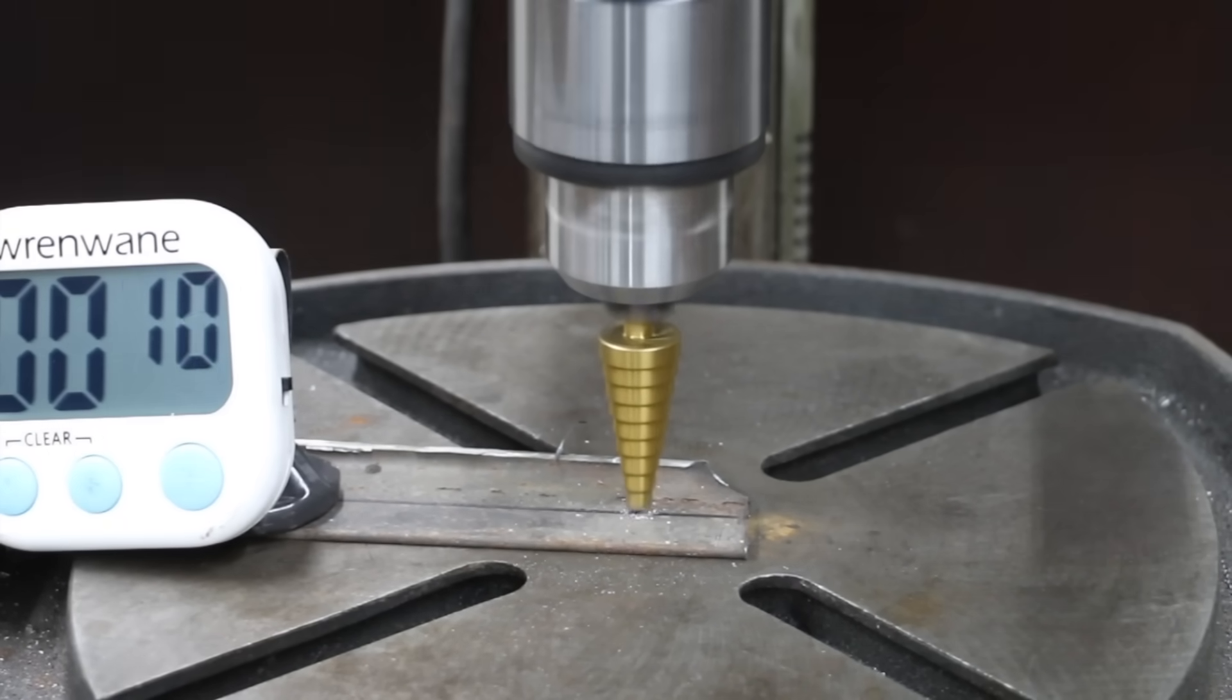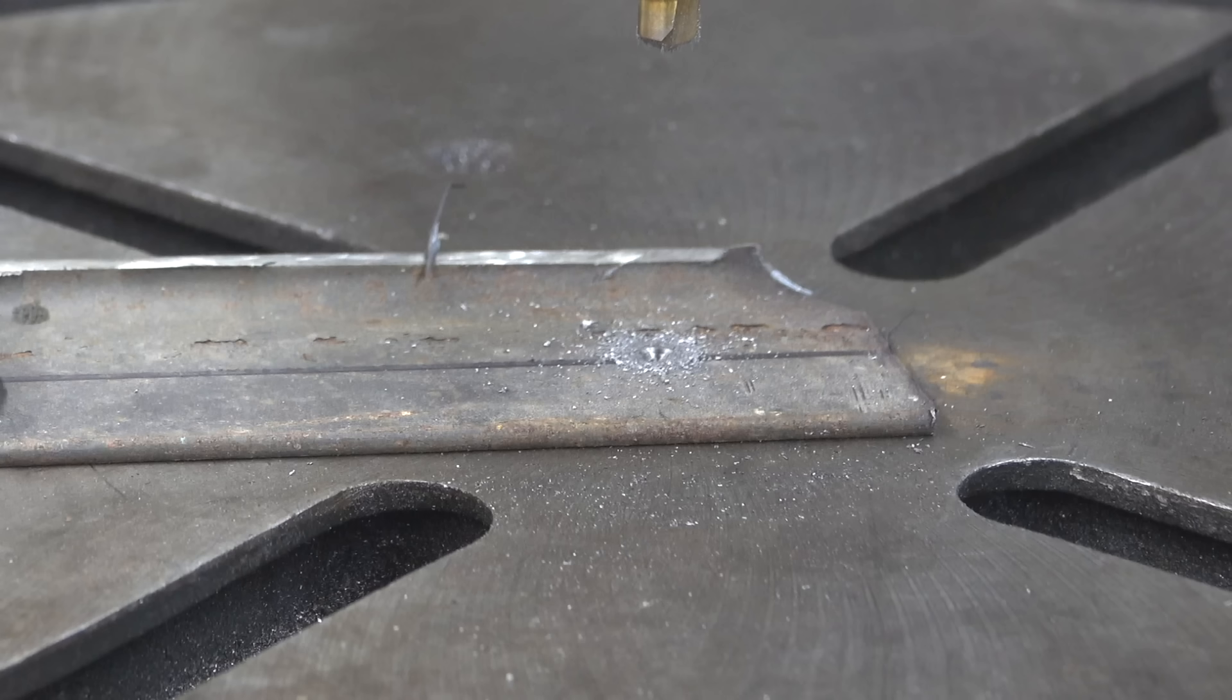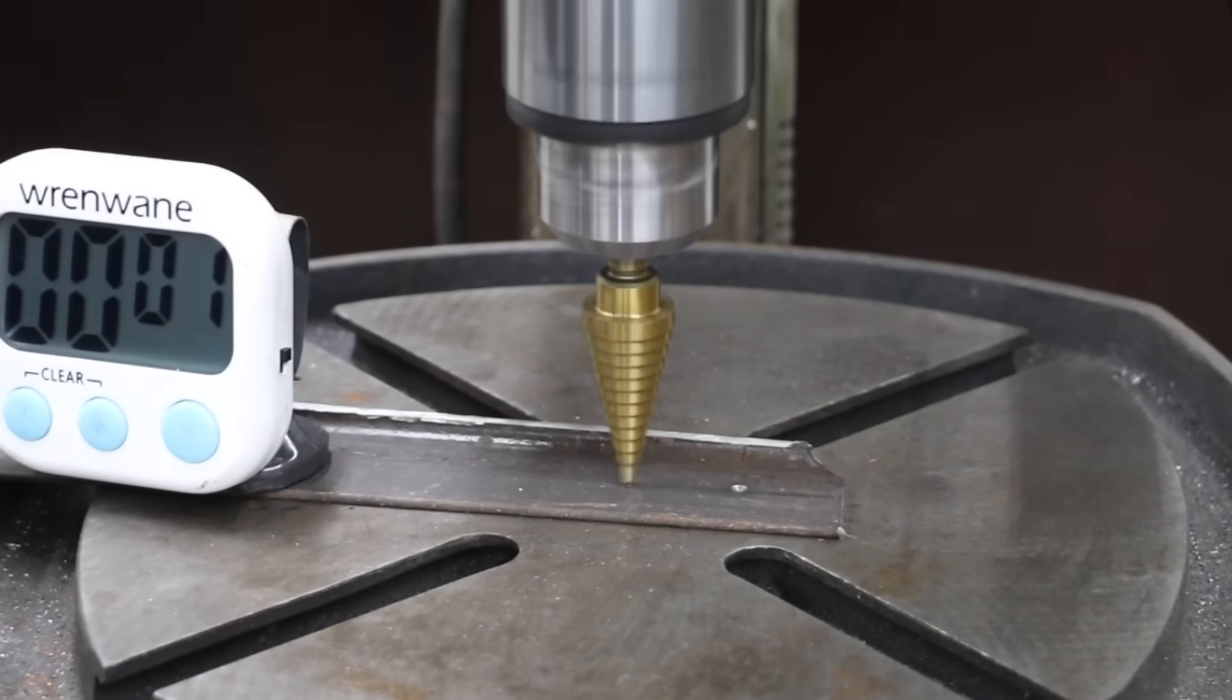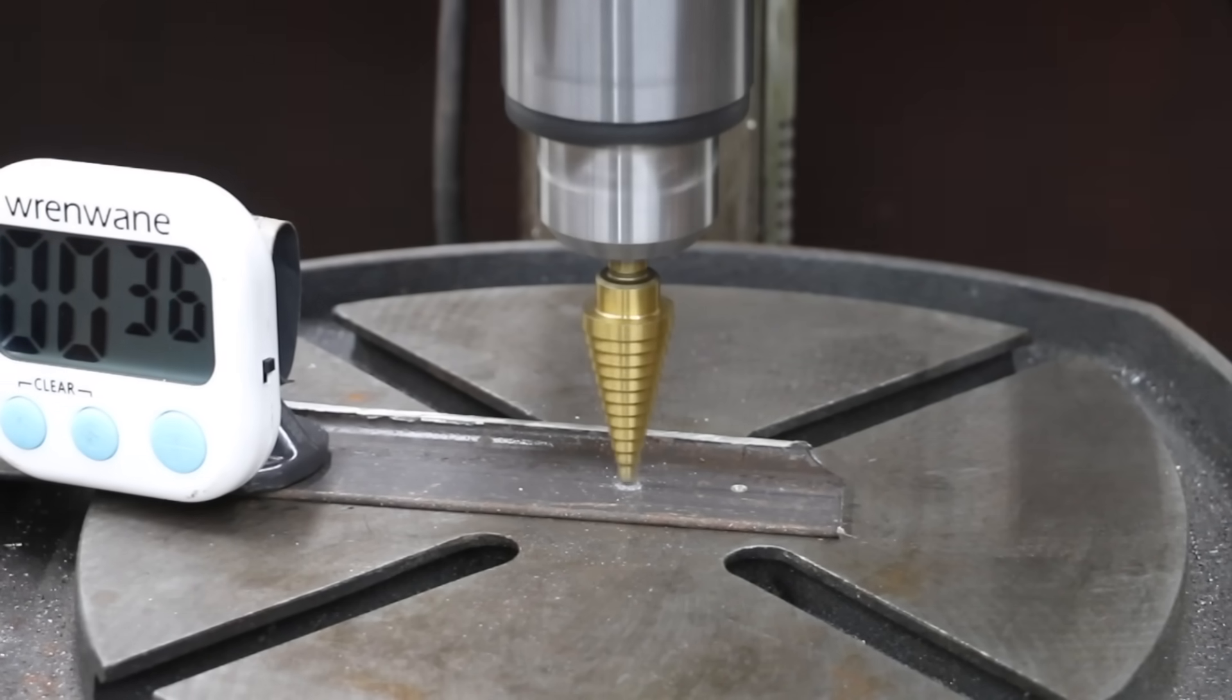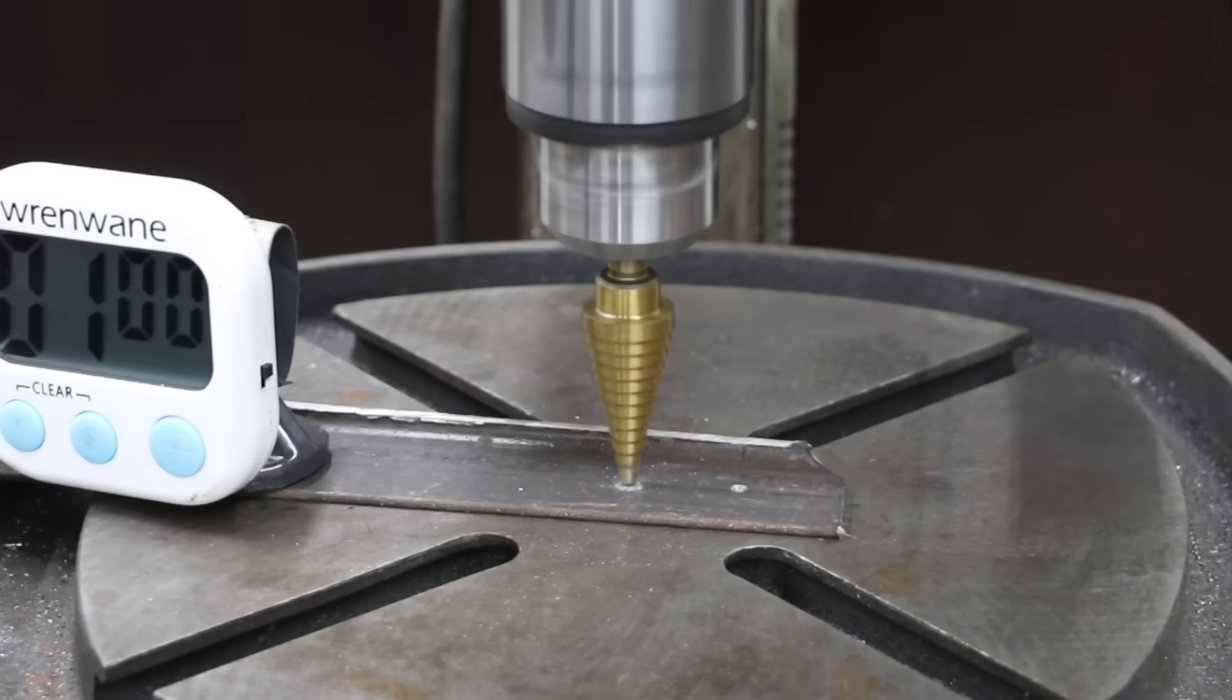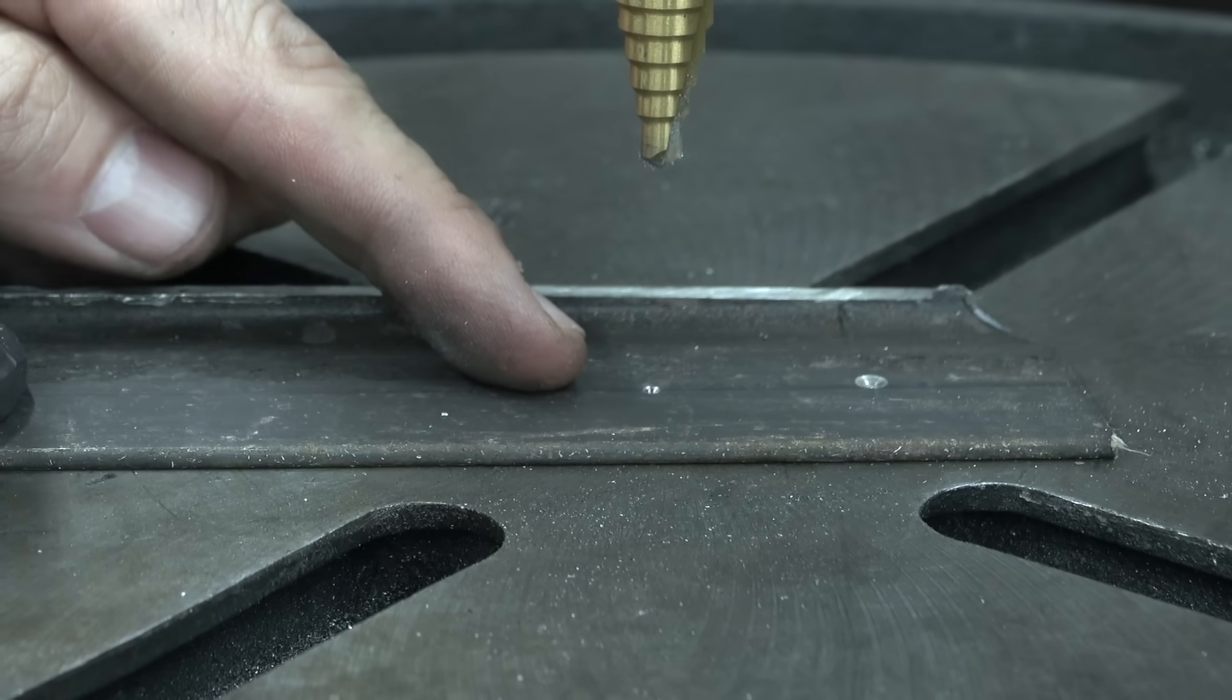Even though the budget DeWalt twist drill made easy work of the medium hardness steel, the Harbor Freight Drill Master wasn't able to drill through the steel and will not advance to the next round of competition. Testing the Nikko next. The Nikko really struggled with the mild steel and, not surprisingly, didn't make much progress with the medium hardness steel either. The Nikko will not advance to the next round.